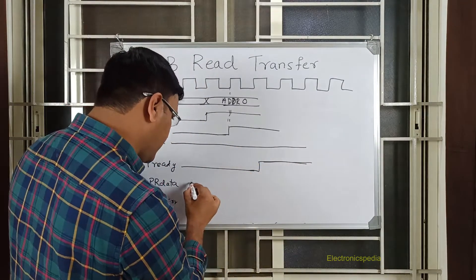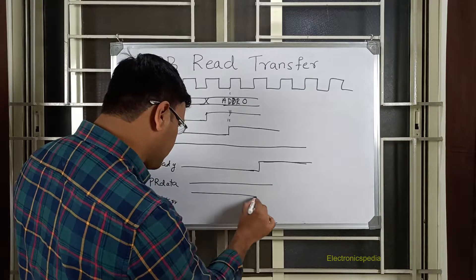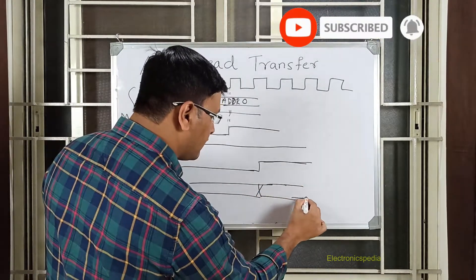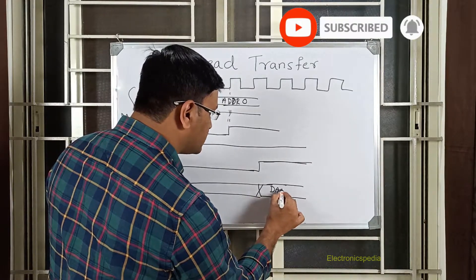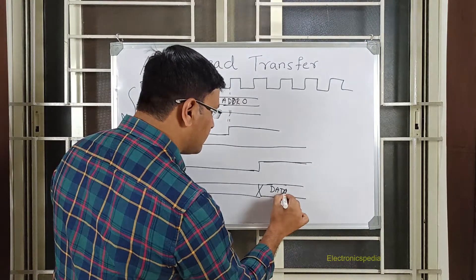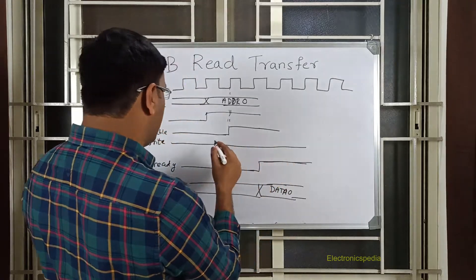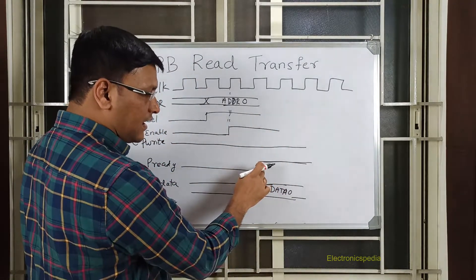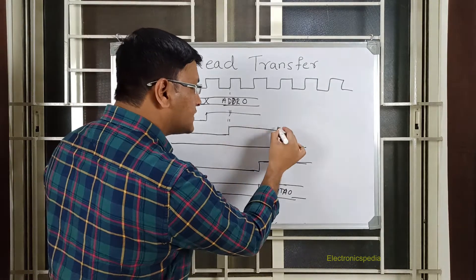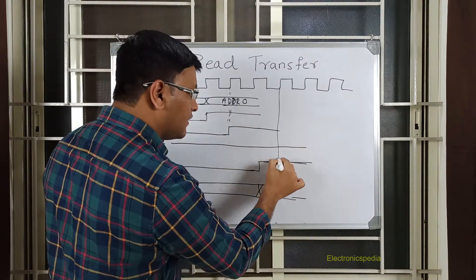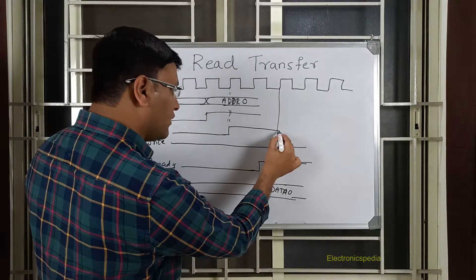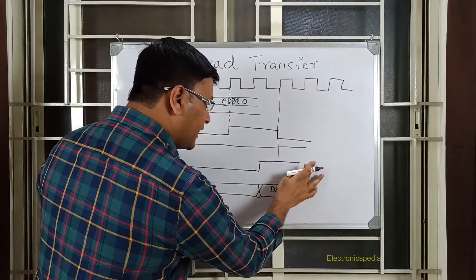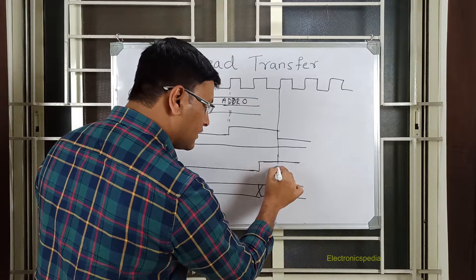If PREADY is asserted, that means my data is already available from the slave. This is my data 0. Now as per the protocol, once PREADY is asserted by the slave, in the next clock cycle my PENABLE should go low, and then PREADY can also go low in that same clock cycle.